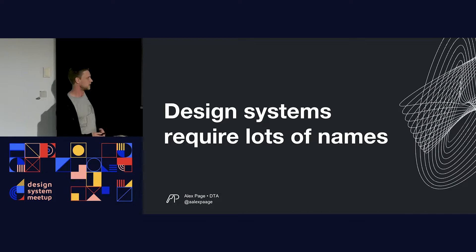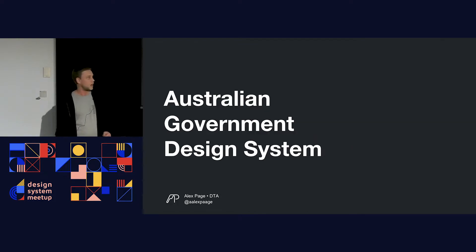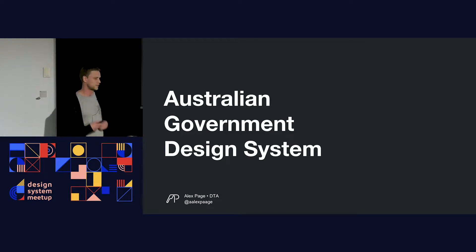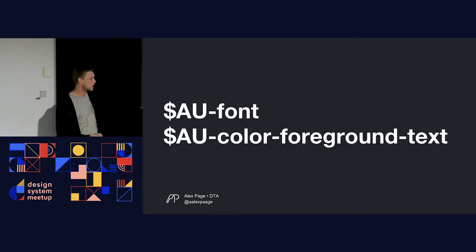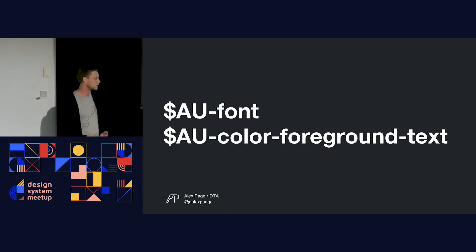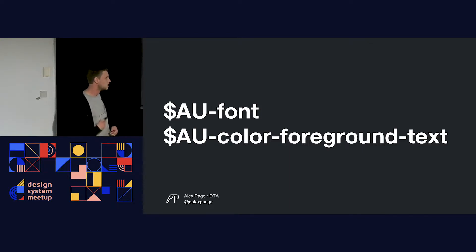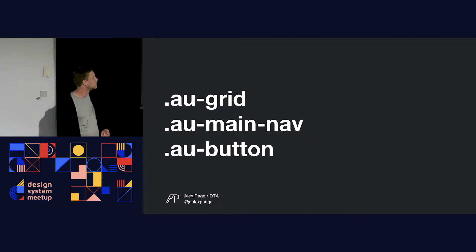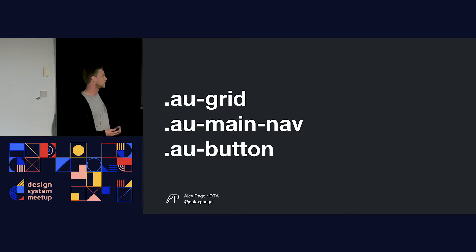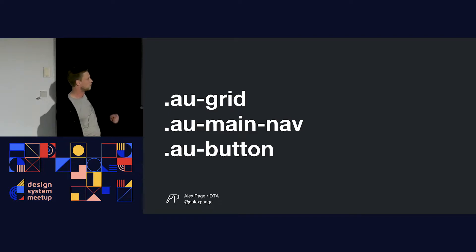Design systems require lots of names. Our design system is called the Australian Government Design System. Inside it, we have variables like AU font and AU color foreground text — the first is our font family, the second is our foreground text color. We also have component class names: AU grid, AU main nav, AU button — our grid system, main navigation, and button.